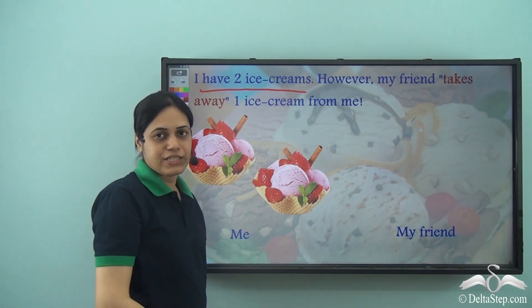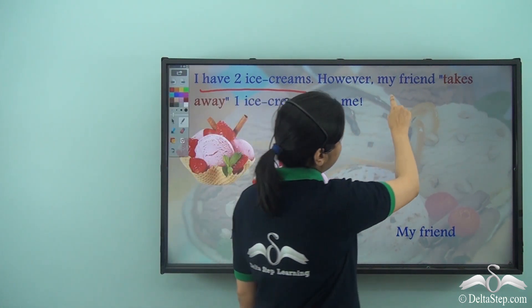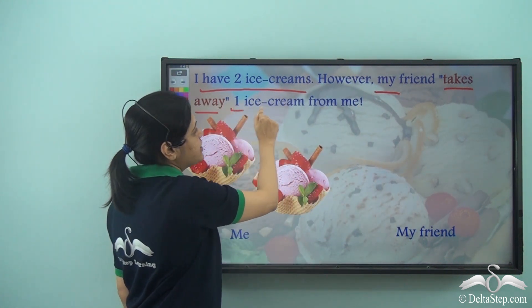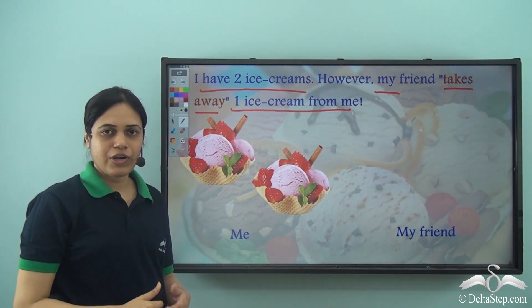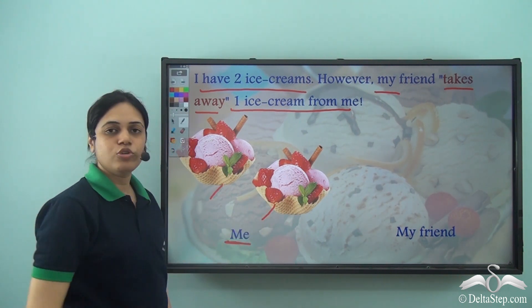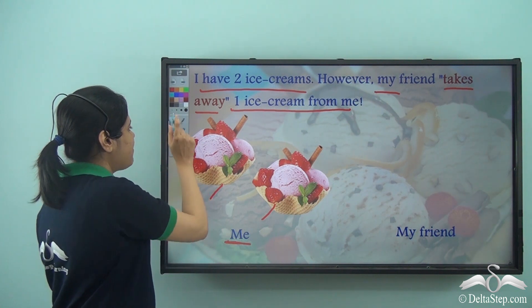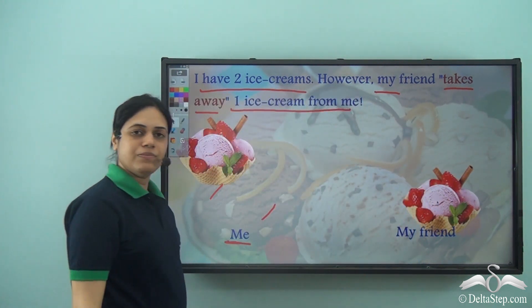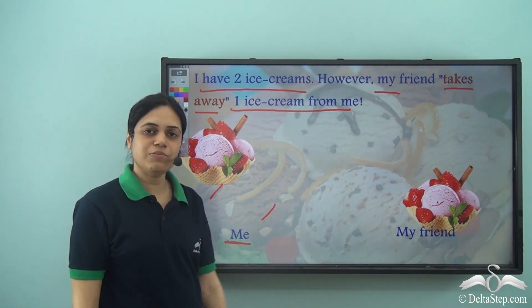I have two ice creams. However, my friend takes away one ice cream from me. So I have two ice creams, one, two, and my friend takes away one ice cream. So I give away this ice cream to my friend.